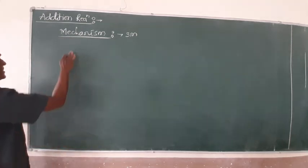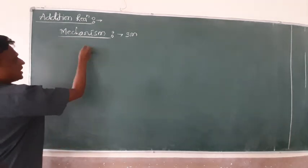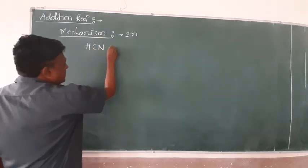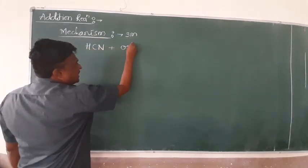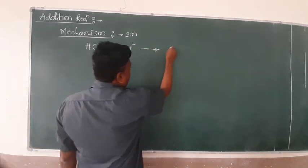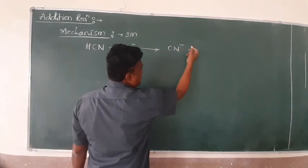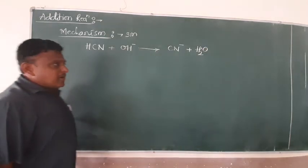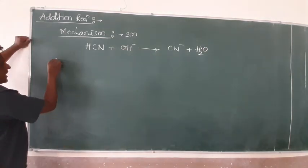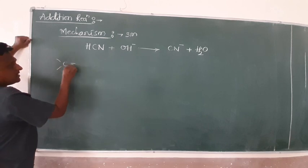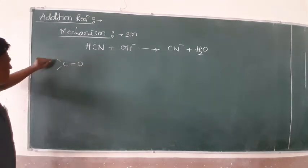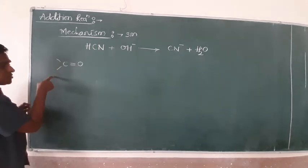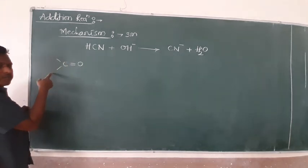We start with the mechanism. When hydrogen cyanide reacts with an alkali, the products formed are CN⁻ and water. Here we have the carbonyl carbon — C double bond O — which you can consider either as an aldehyde (RCHO) or a ketone (RC double bond R).